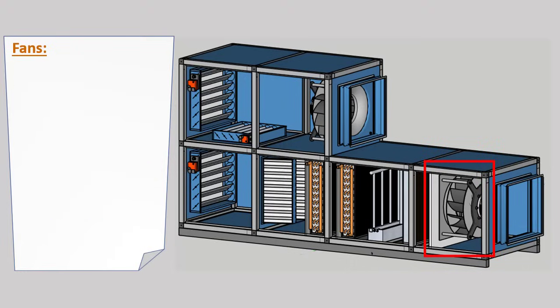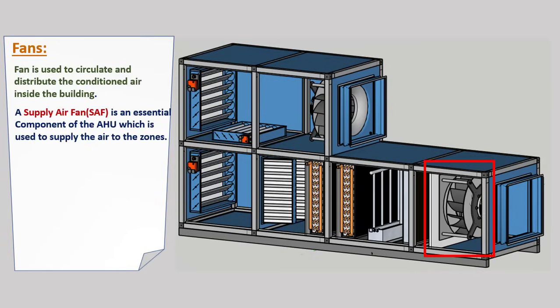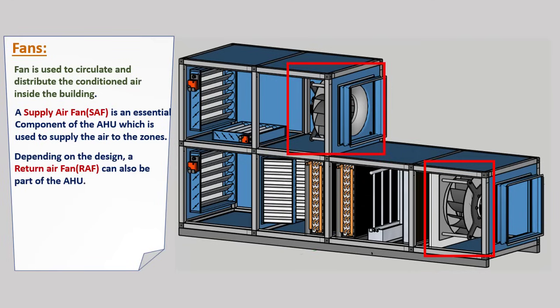Then we have fans, used to circulate and distribute conditioned air inside the building. A supply fan is an essential component of the AHU, used to supply air to the zones. Depending on the design, a return air fan can also be part of the AHU, but this is optional and may not be found in all AHUs.